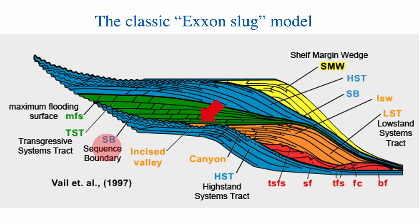We start with a sequence boundary on top of the previous sequence. The sequence boundary represents emergence and exposure — so a drop in base level. That drop in base level creates a lowstand tract, or LST, that you can see here in red and orange.